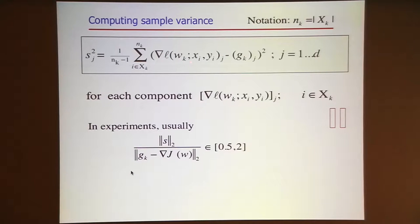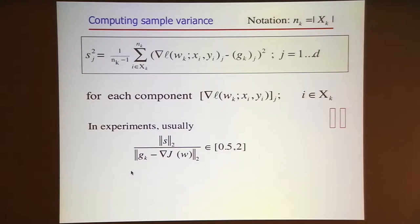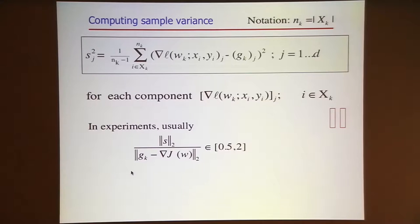Here is the sample variance using quantities that are computable. Here is my stochastic gradient and the gradients of the component functions. In experiments I use this quantity to approximate the true difference between the gradient and the approximate gradient. In the tests we did for the speech problems, this ratio was always between 1.5 and 2—so not a perfect estimate, but within a factor of 2.